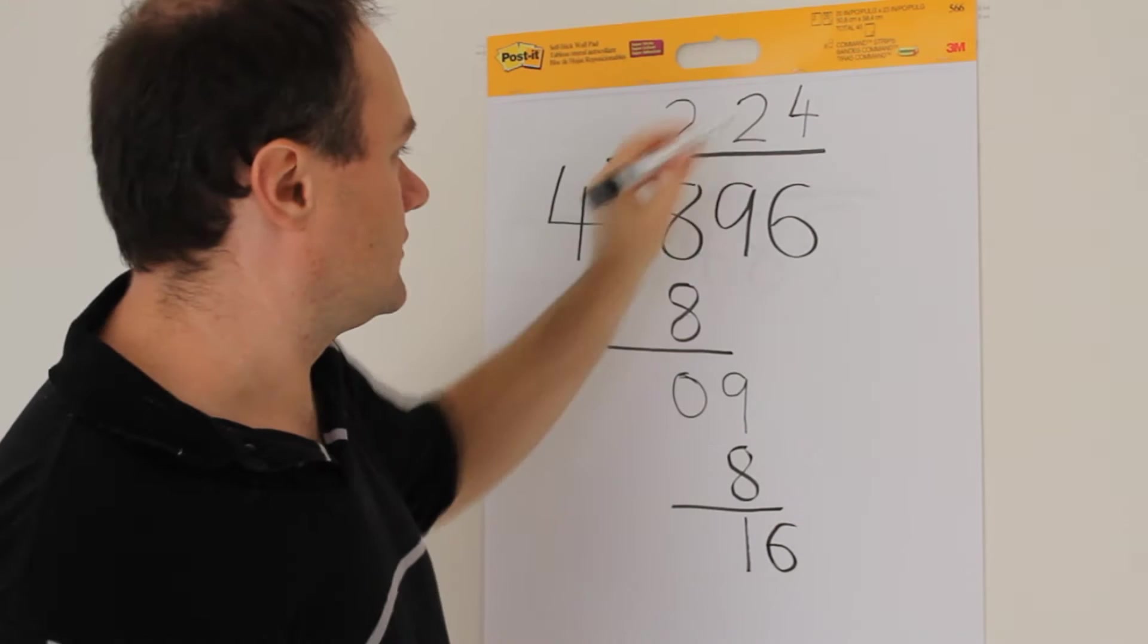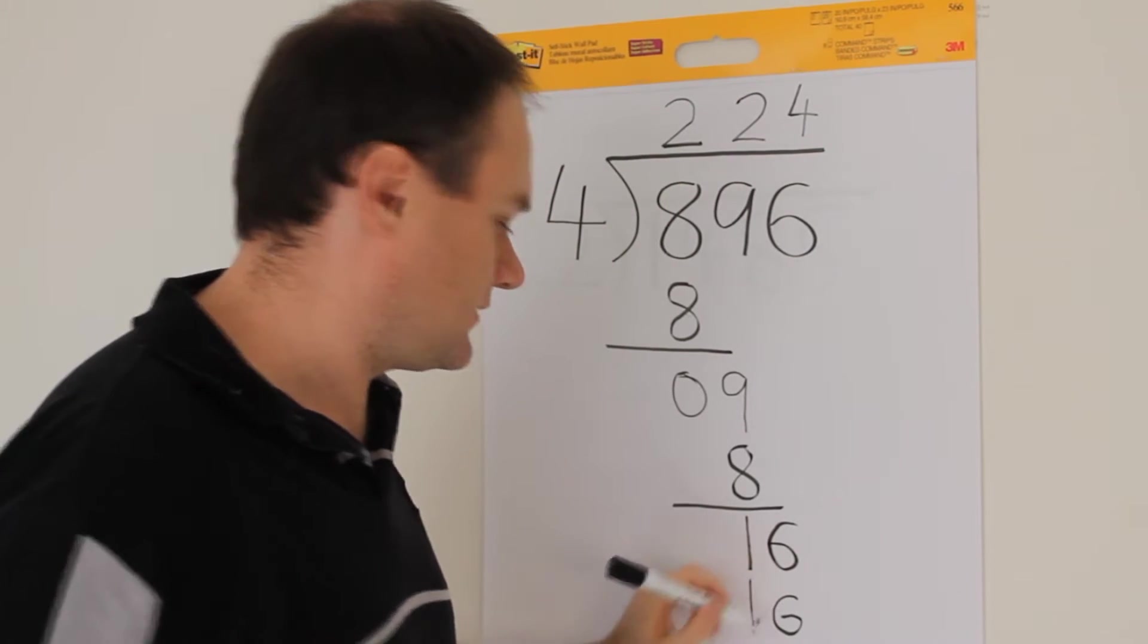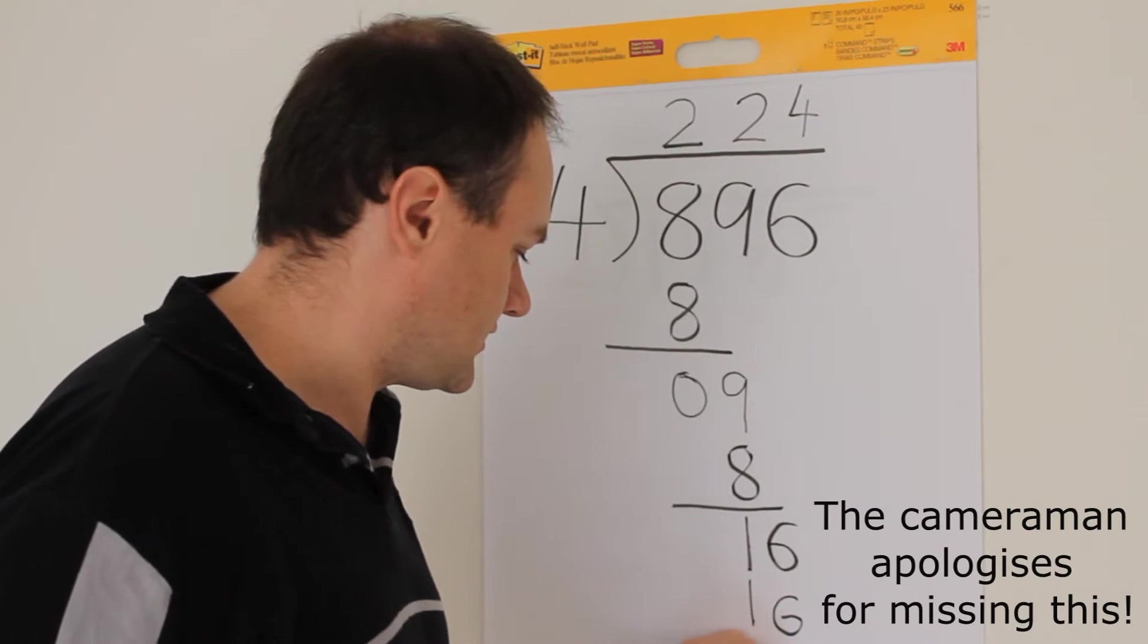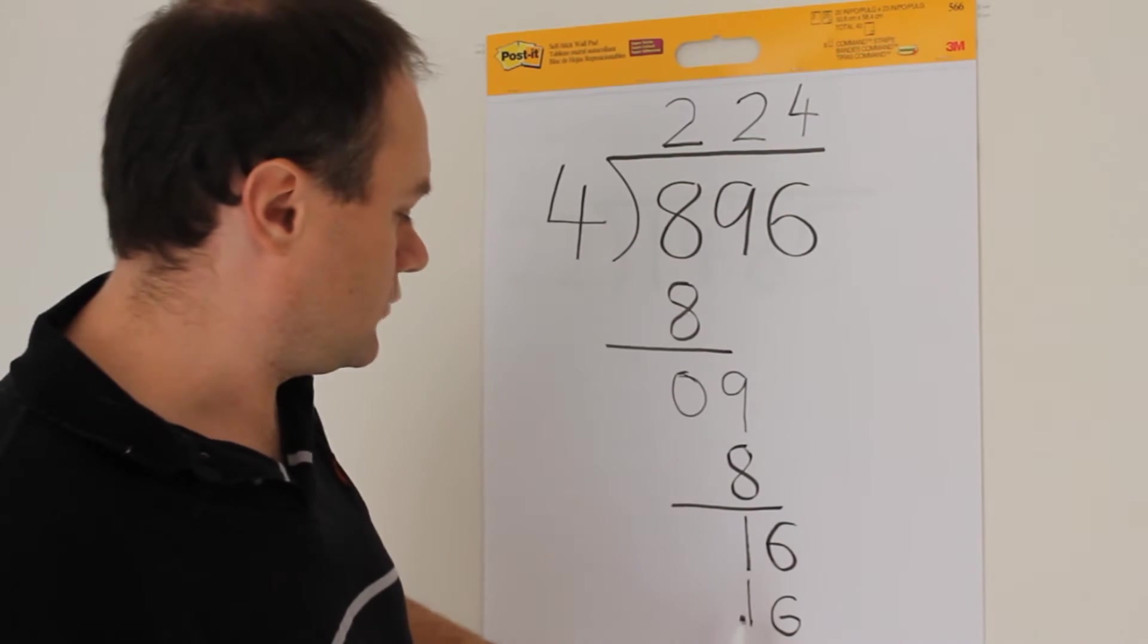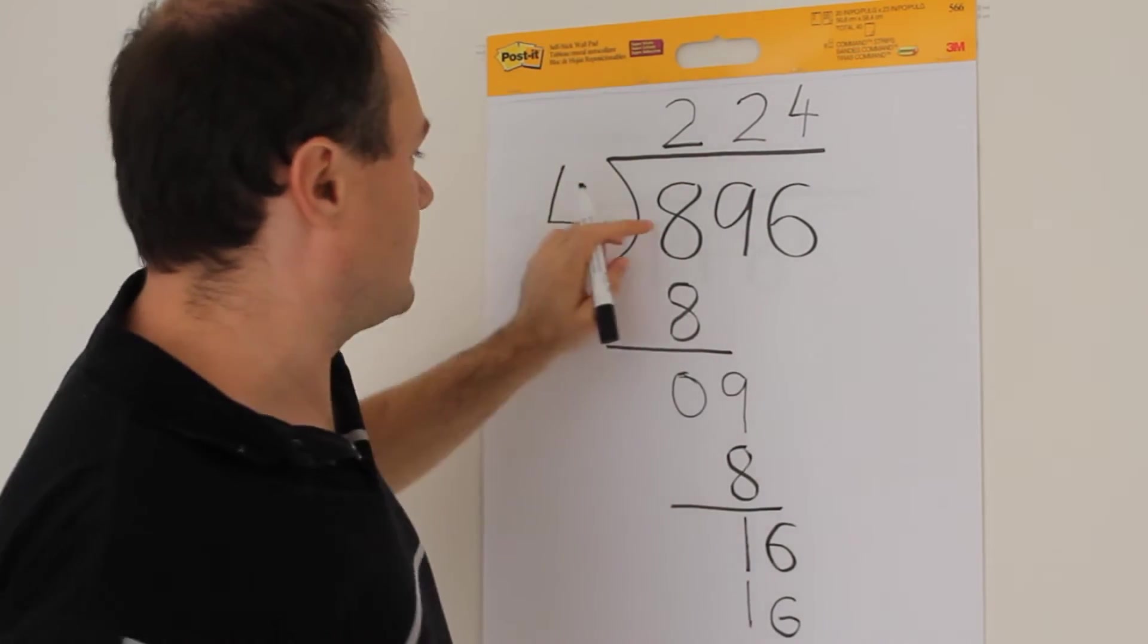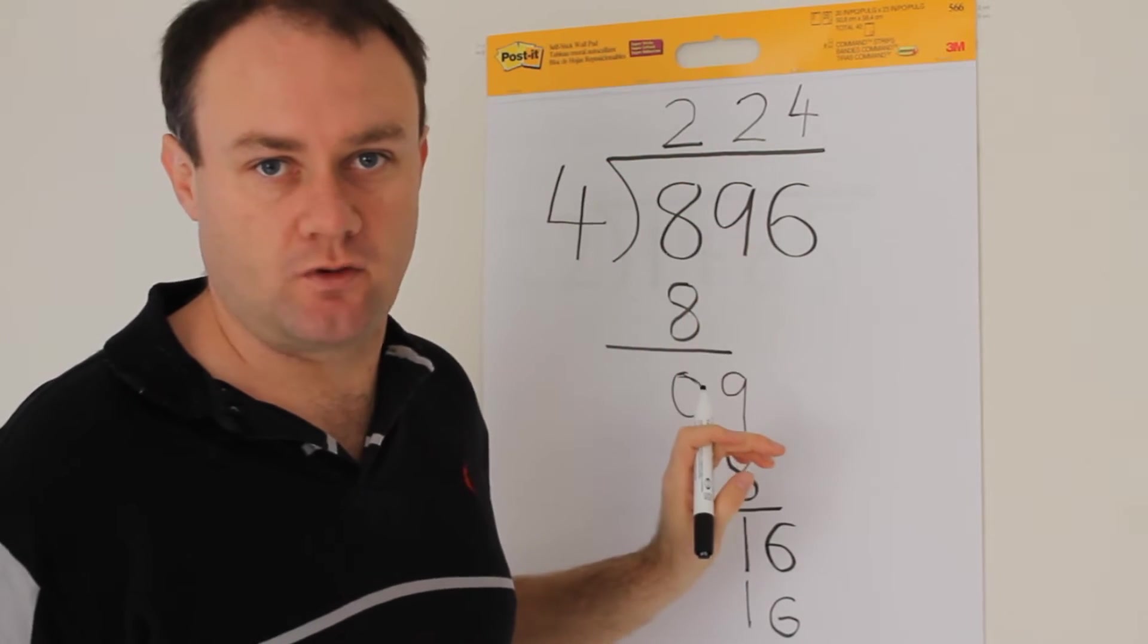Straight to multiplication. What's 4 times 4? It's 16. Now to subtraction. 16 minus 16 is 0. We've used all these numbers up here. We've got a 0 down here. We are finished. 896 divided by 4 equals 224.